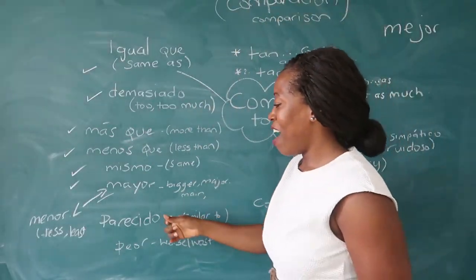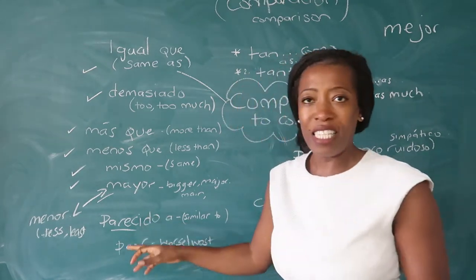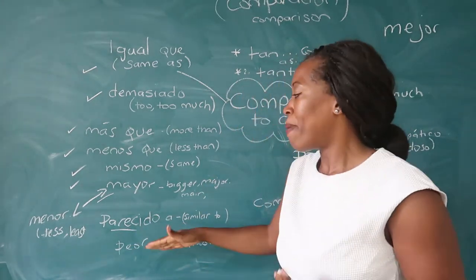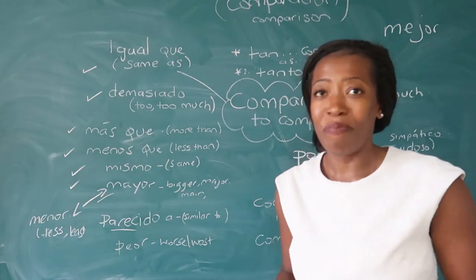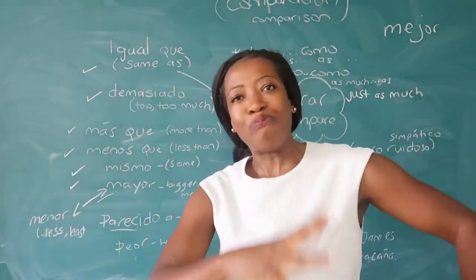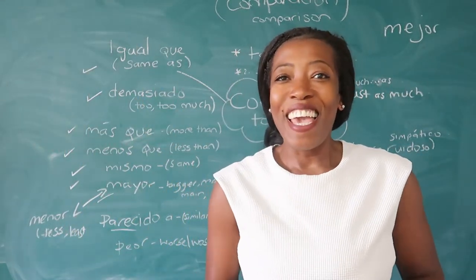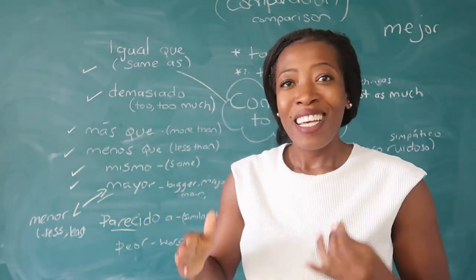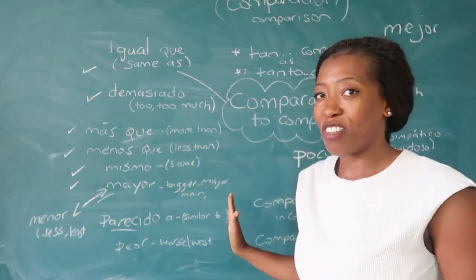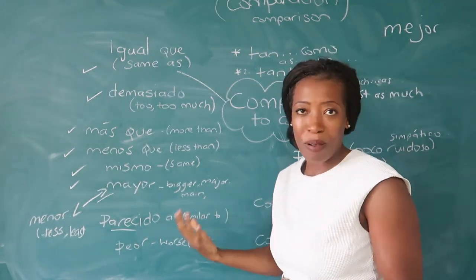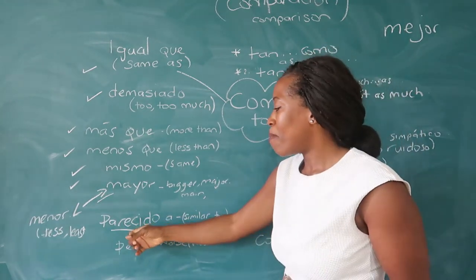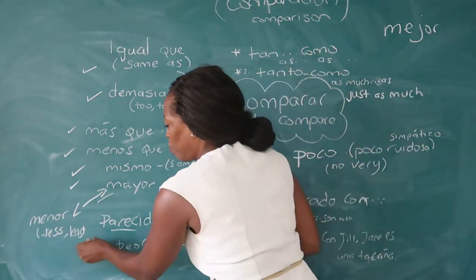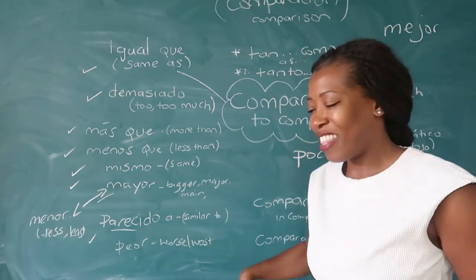The next one is parecido — this is one you'll use in lots of different cases. Parecido a means 'similar to.' For example: el francés es parecido al español — French is similar to Spanish. We need to know that too.